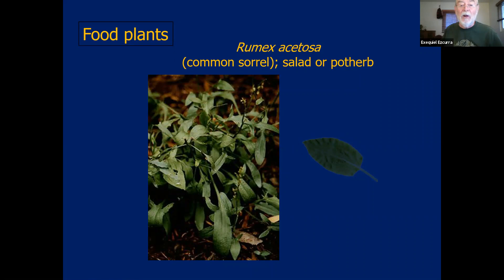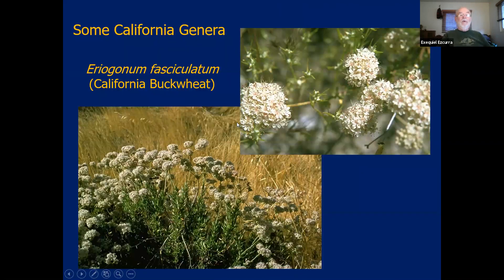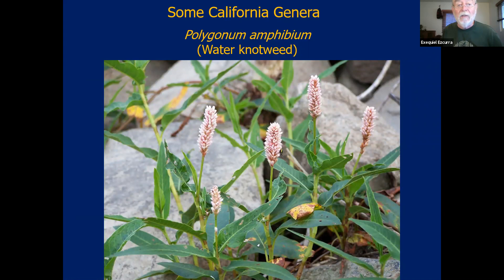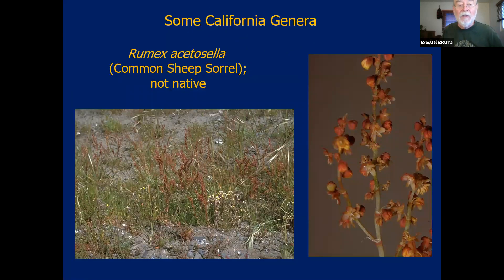Other food plants include common sorrel, which is used in salads. Many Polygonaceae are used as ornamental plants — the seaside grape is an important ornamental, and Antigonon, the coral vine, is seen on the east coast and is even invasive in some parts. Some California genera: the most important in Southern California is the California buckwheat, Eriogonum fasciculatum. There is also the water knotweed, also known as Wireweed — Polygonum aviculare — in lawns, and Rumex acetosella, the common sheep sorrel, which grows in ditches and waterways.